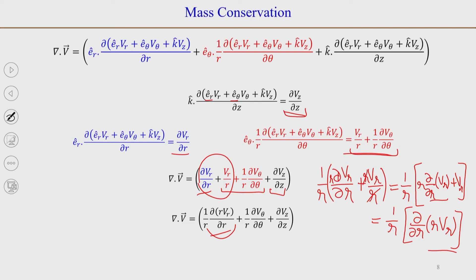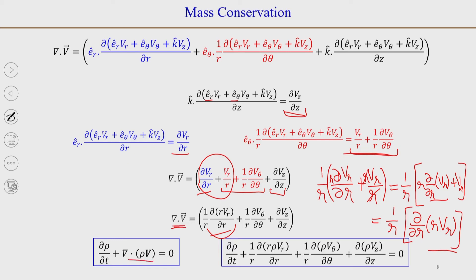Combining all three terms, del dot v = dou v_r/dou r + v_r/r + (1/r) dou v_theta/dou theta + dou v_z/dou z. The first two terms can be combined as (1/r) dou/dou r of (r v_r), giving del dot v = (1/r) dou/dou r (r v_r) + (1/r) dou v_theta/dou theta + dou v_z/dou z. Replacing v with rho v gives the expanded continuity equation in cylindrical coordinates.